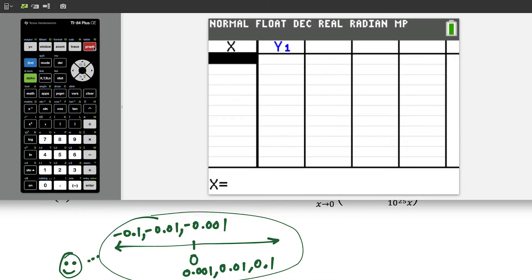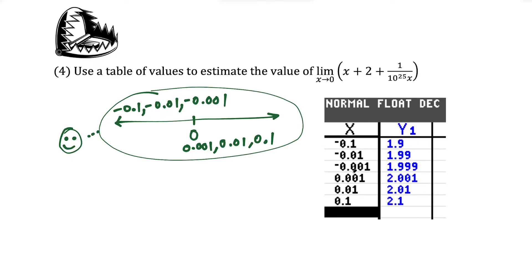Going over to the table, pressing second graph, and typing in these six values. Now let's use this table to estimate the limit as x approaches 0. Notice x equals 0 is between these two x values. Finding the limit from the left side, the y values are approaching 2. Finding the limit from the right side, the y values are also getting closer to 2. So this tells us the limit as x approaches 0 of this function is equal to 2.